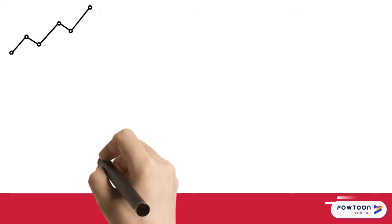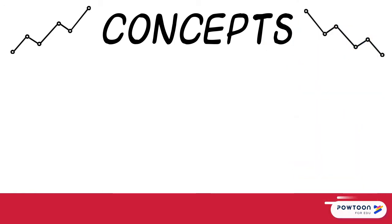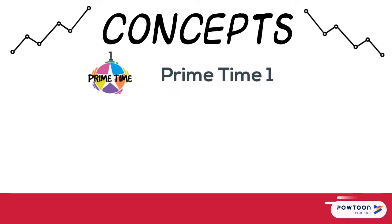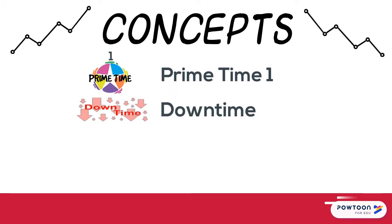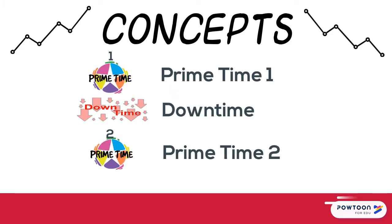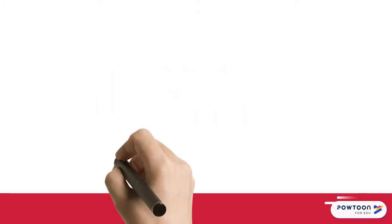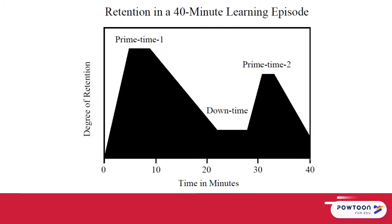We apply the concept of Primacy Recency or Serial Positioning by breaking the learning episode into chunks called Primetime 1, Downtime, and Primetime 2. Primetime 1 usually takes about half of the overall lesson time, while Downtime is roughly a quarter of the lesson time, and the remaining 25% is for Primetime 2.